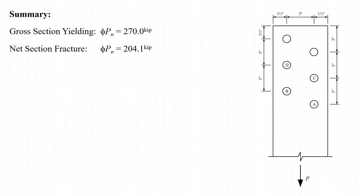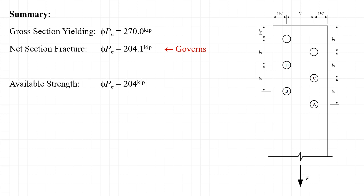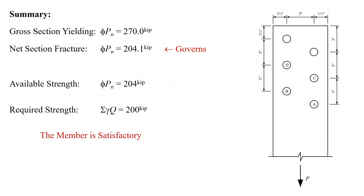Comparing the gross section yielding design strength of phi P sub n = 270 kips with the net section fracture design strength of phi P sub n = 204.1 kips, net section fracture governs. The available strength is phi times P sub n = 204 kips. Comparing that to the required strength of sum of gamma Q = 200 kips, we find that the member in this configuration is satisfactory.